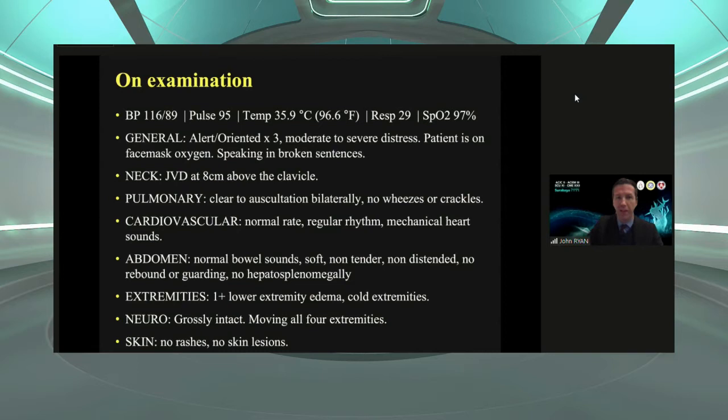On exam, his blood pressure was initially maintained at 116 over 89, heart rate was 95, and he was saturated at 97%. He was alert and oriented. His JVP was high, his lungs were clear, and he had one-plus lower extremity edema.